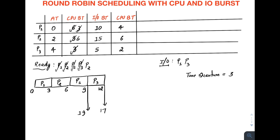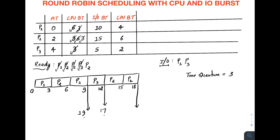At time 12 only P2 remains in the ready queue (P1's I/O completes at 19, P3's at 17). Give the CPU to P2 from 12 to 15. At time 15 P2 is still the only process, so give it the CPU again from 15 to 18. P2's first CPU burst is now done and it goes for I/O from 18 to 33 (18 + 15 = 33).